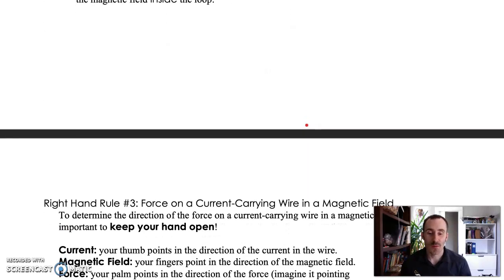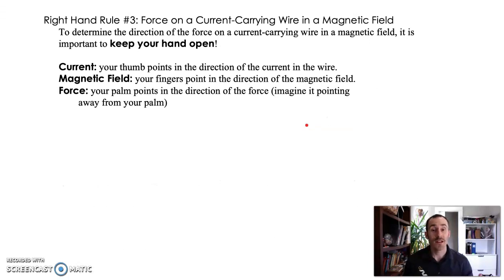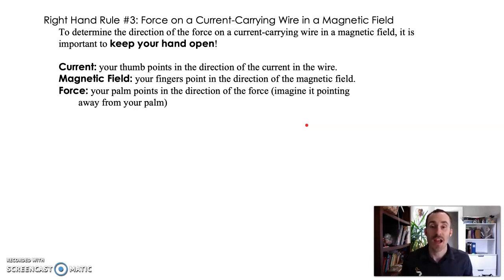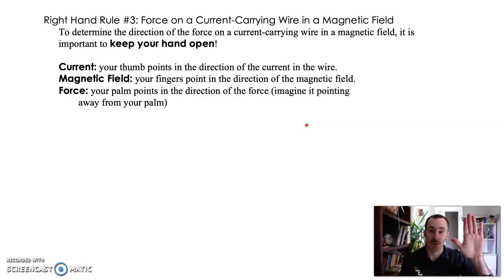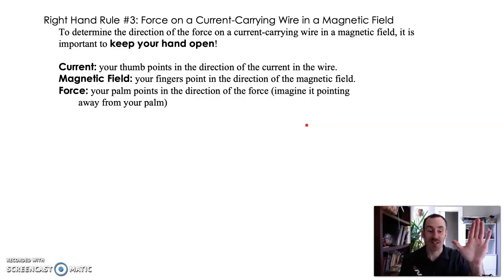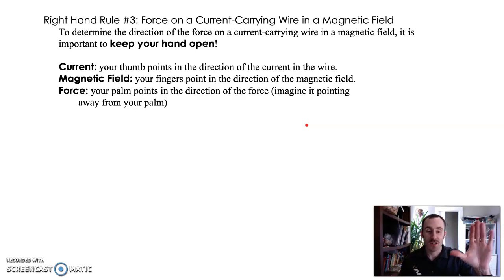Right-hand rule number three is for force. When a current travels through a wire, it creates a magnetic field. If you put that wire in an external field, those two fields act like magnets on each other, and the current-carrying wire experiences a magnetic force. This is the force rule — a flat-hand rule. Your fingers are the magnetic field, your thumb is the direction of the current, and your palm points in the direction of the force on that wire. Think of it as the Star Wars rule — the force comes out of your palm. Current, field, force.